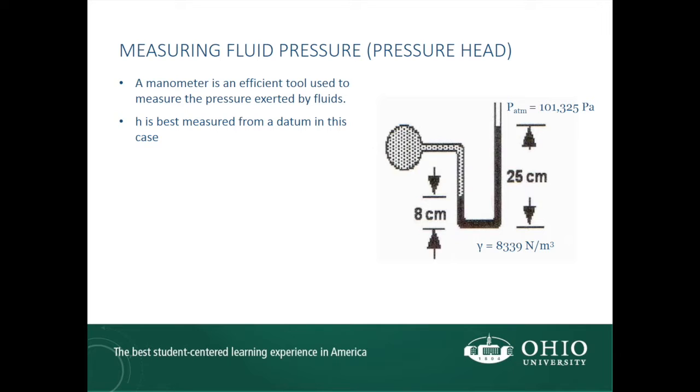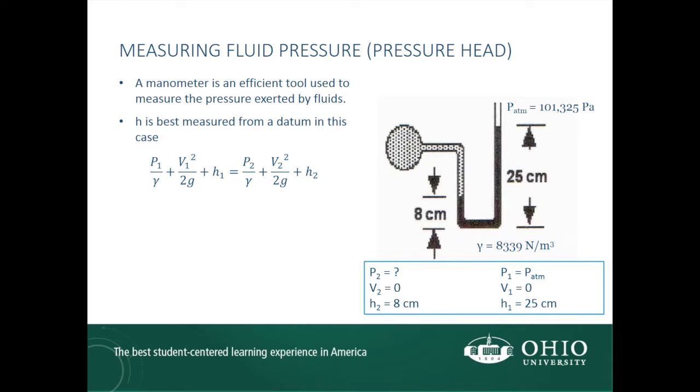We can also measure the pressure exerted by a fluid using a manometer and applying Bernoulli's equation. The manometer shown in the diagram on the right is holding two different fluids, and the fluids meet at point 2. The unit weight of the dark fluid, which is oil, is 8,339 N per cubic meter. The elevations of points 1 and 2 are taken relative to a datum, which is set at the base of the manometer. We can start by writing Bernoulli's equation and identifying what we know and what we're trying to find. At point 2, we're trying to find the pressure. We know the velocity is zero because the fluid isn't moving, and we know the elevation is 8 cm.